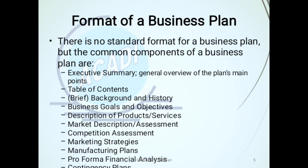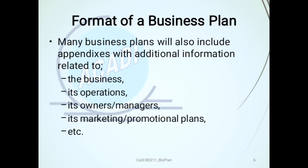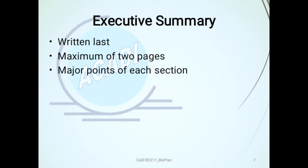Continuing with the format, many business plans will also include appendixes with additional information related to the business, its operations, its owners and managers, its marketing and promotional plans, and so on. The executive summary is always written last and has a maximum of two pages.